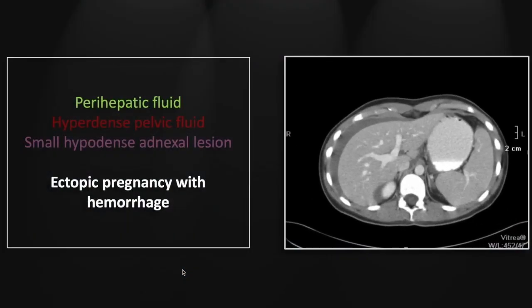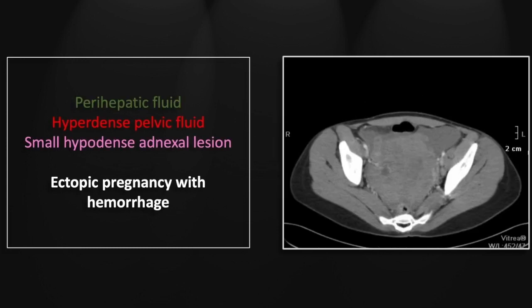Our next case is an ectopic pregnancy with hemorrhage. You can see high in the abdomen there is extensive intraperitoneal fluid. In the pelvis, there is hyperdense fluid consistent with extensive hemorrhage, and there is a little hypodense lesion here in the right adnexa, immediately adjacent to a vessel.